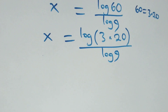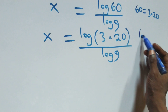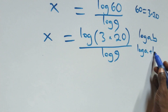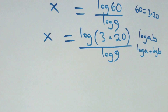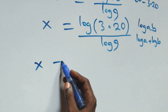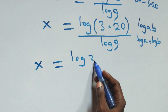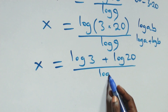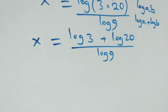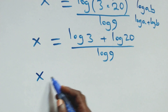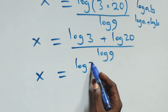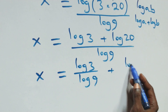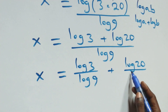From here, this follows from the law of logarithm: log(a times b) can be written as log a plus log b. So we have x equals log 3 plus log 20, all over log 9. And from here: x equals log 3 over log 9 plus log 20 over log 9.